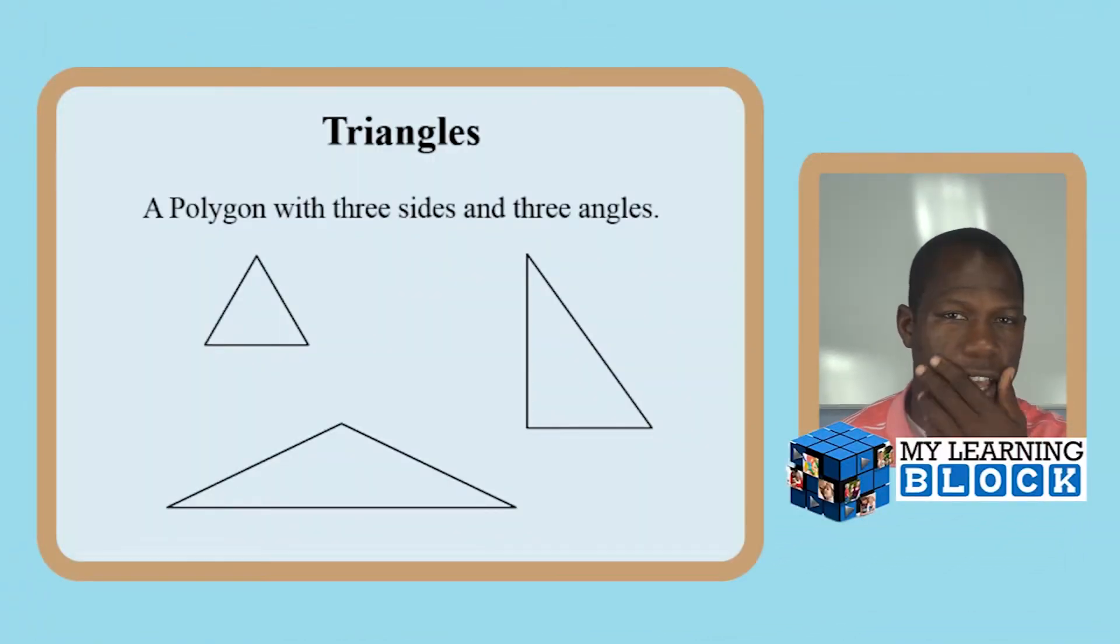Today we're going to learn about polygons. More specifically, we're going to learn about triangles. Triangles are a polygon that has three sides and three angles. Hence the word tri. Tri meaning three in Latin, I do believe. One of those romantic languages, you know. Well, anyway, let's get down to it.